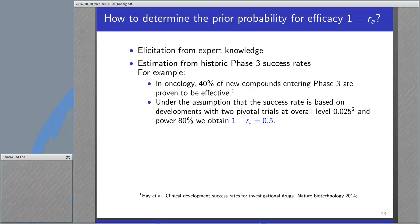How can we determine the a priori probability for efficacy, 1 minus R_A? One way could be to examine expert opinions by elicitation from expert knowledge, where you can use Bayesian tools to derive this value. Another way is to use empirical data. For example, one could take the historical success rate in a specific indication. In oncology, it might be known that 40% of new compounds entering phase 3 are proven to be effective, under the assumption that the success rate is based on development with two pivotal trials, both using an overall level of 2 times 0.025 and a power of 80%. Then we can derive that 1 minus R_A would be 0.5.